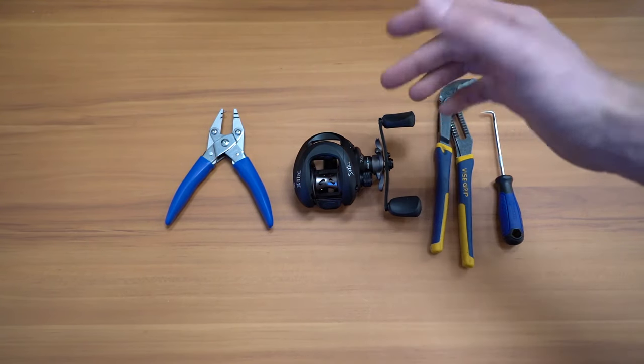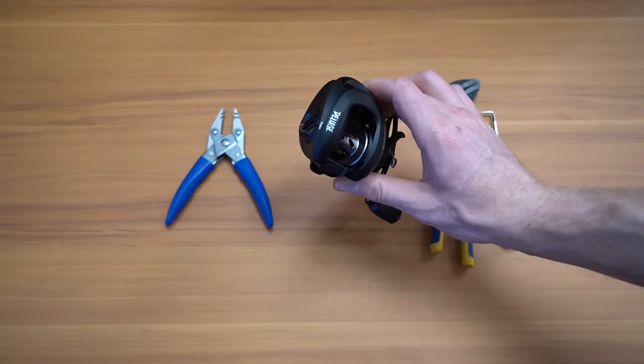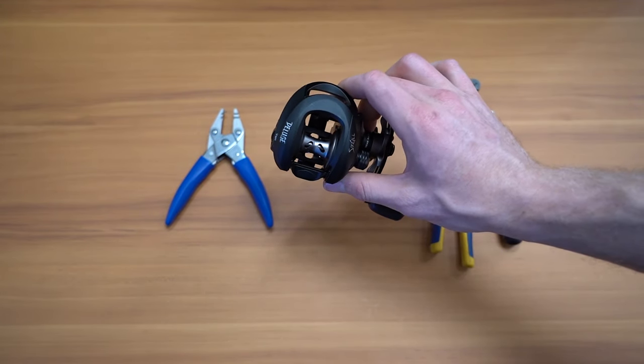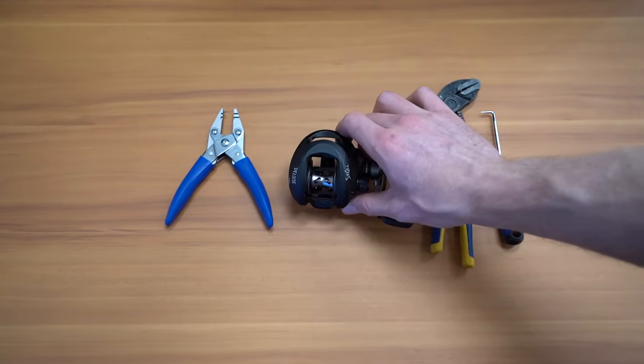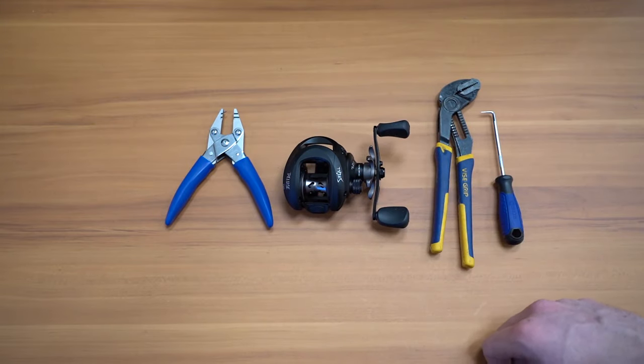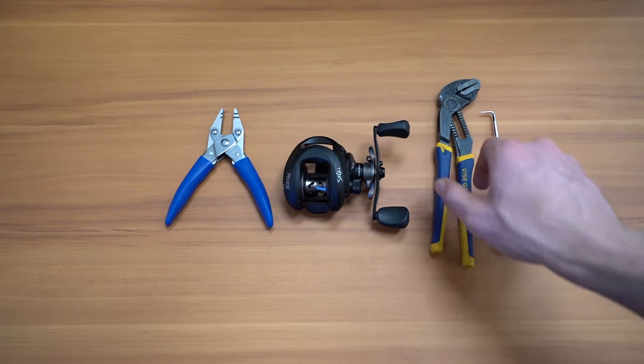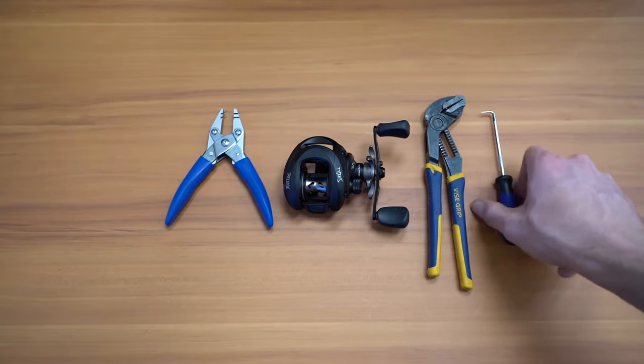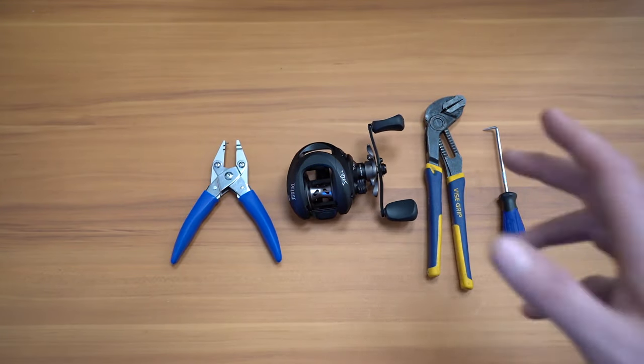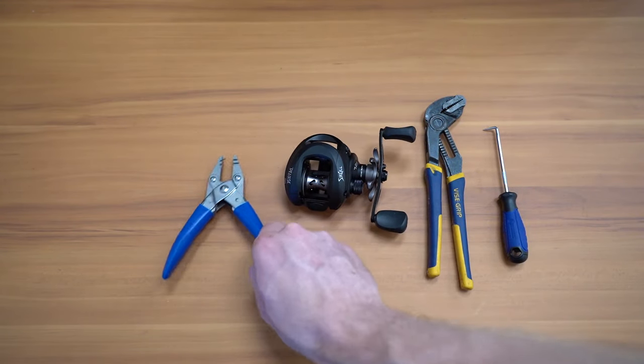So what you're going to need is a Six Gill Fishing Reel. I'm using the Deluge 7-to-1 right-handed reel. It is our most affordable reel and can be found on our website at sixgillfishing.com. You're going to need a pair of channel locks, some sort of pick, and if you have them handy, some bearing pliers as well.